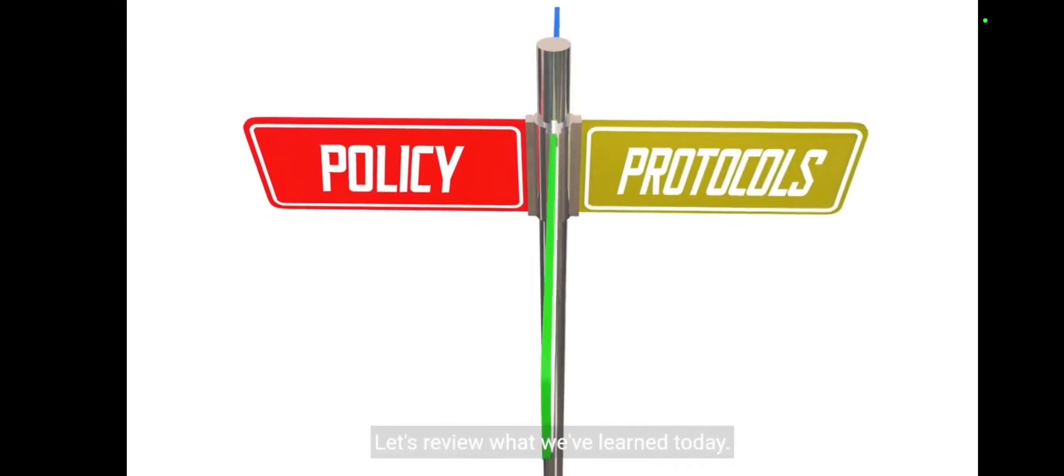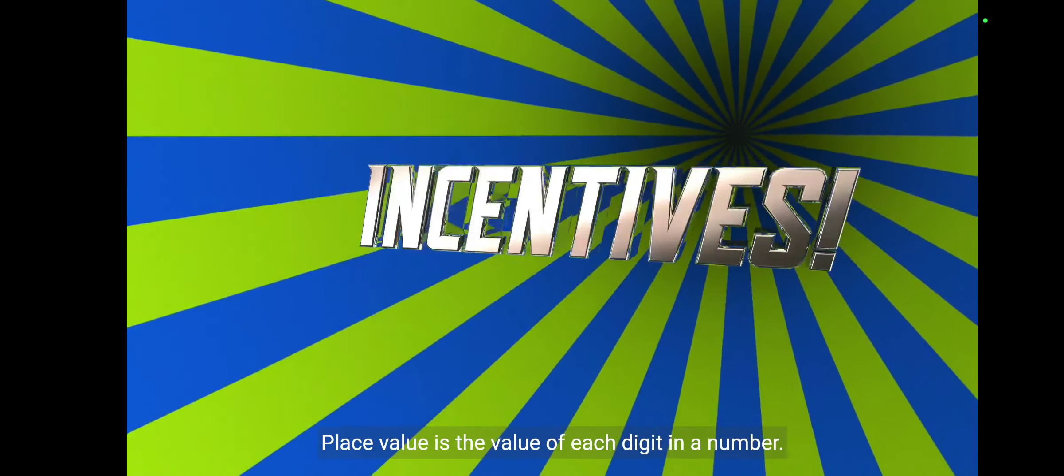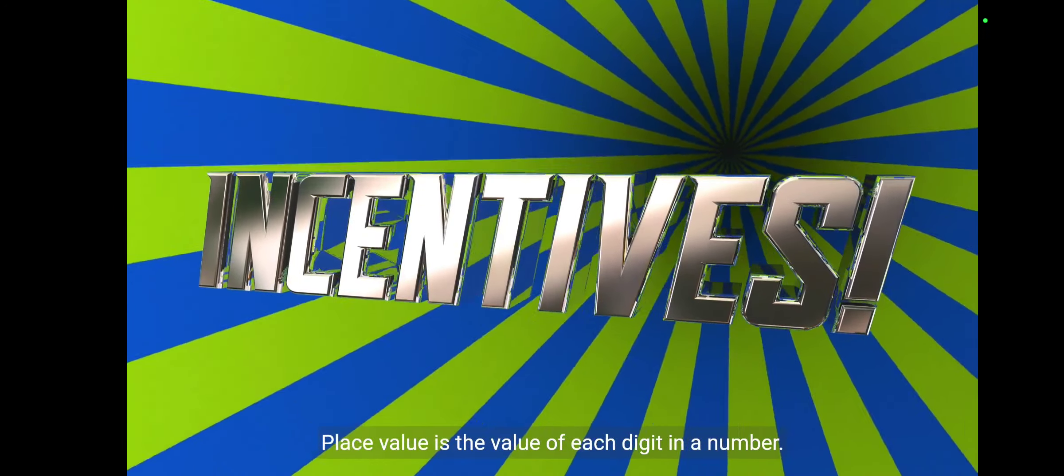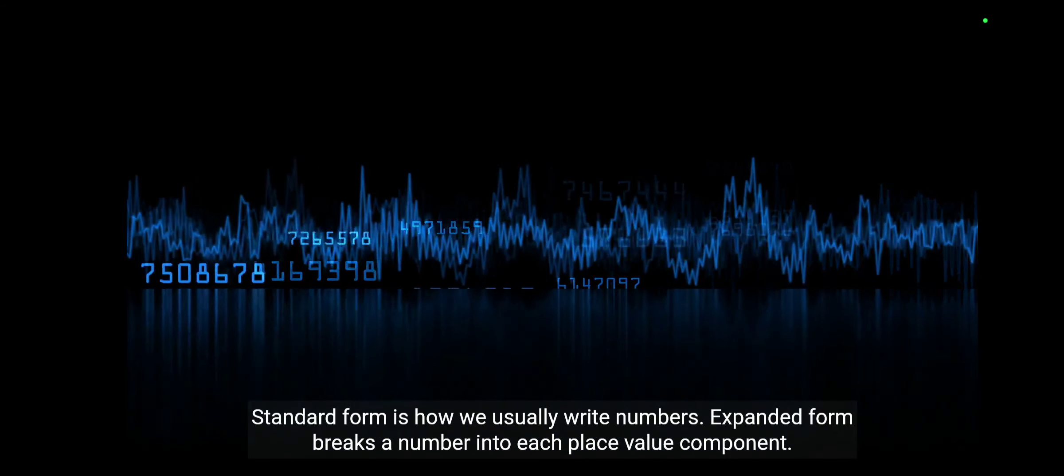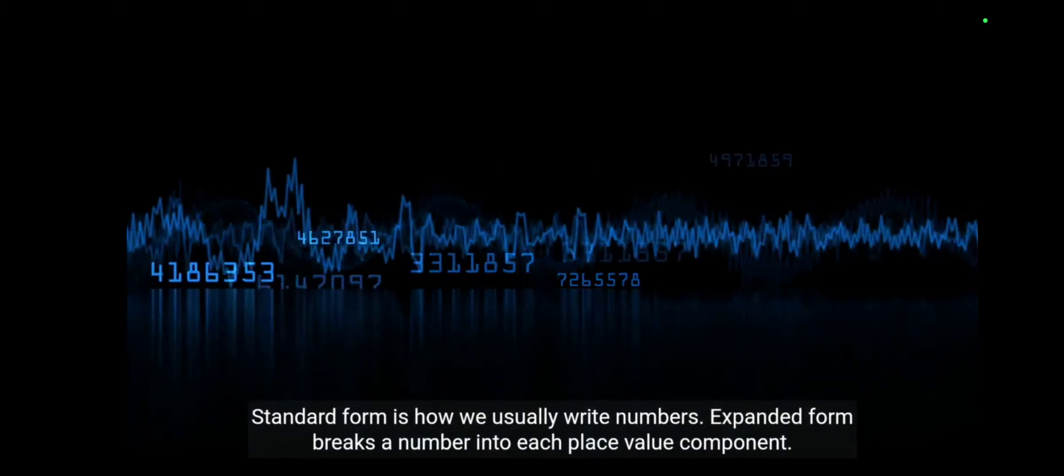Let's review what we've learned today. Place value is the value of each digit in a number. Standard form is how we usually write numbers. Expanded form breaks a number into each place value component.